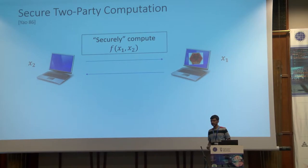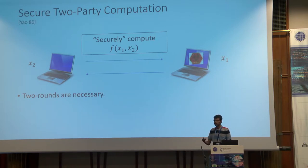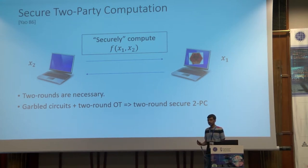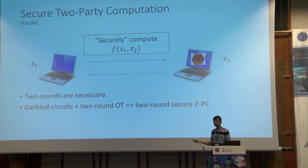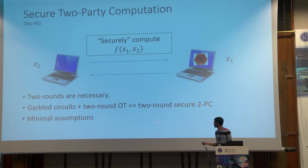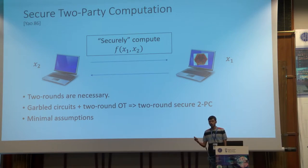Let me quickly summarize what we know. We know that there are certain functionalities for which two rounds are necessary to securely compute them, meaning they cannot be securely computed in a single round. On the positive side, garbled circuits along with a two-round oblivious transfer gives a two-round protocol for securely computing any two-party function. Furthermore, two-round OT is the minimal assumption, as any two-round two-party computation implies a two-round OT protocol.